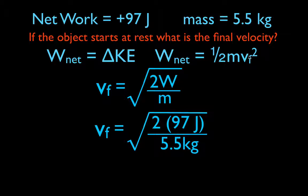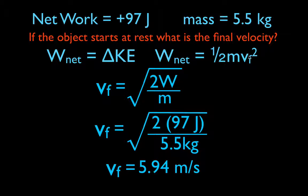That's the net work divided by the mass — 5.5 kilograms — and you take the square root of that. You get that the final velocity of the object is 5.94 meters per second. So there you go: we found the net work, then we used the work-energy theorem to find the change in velocity of the object.